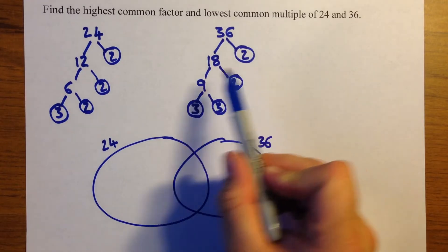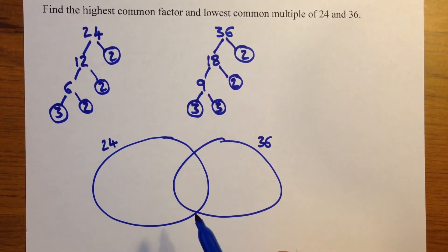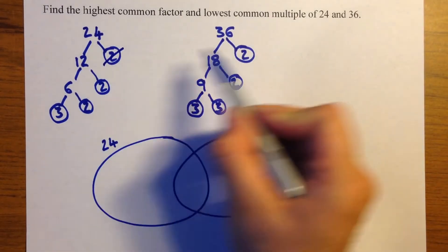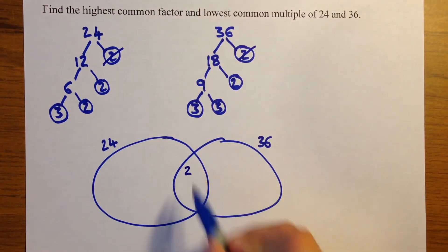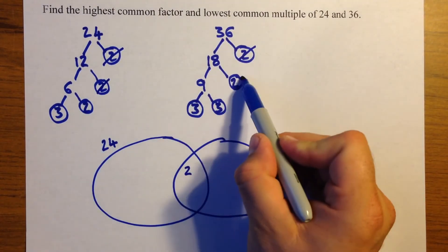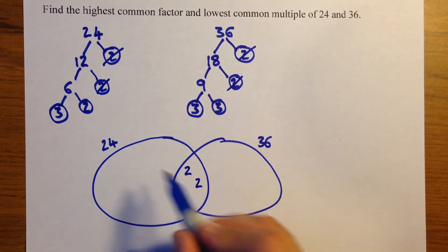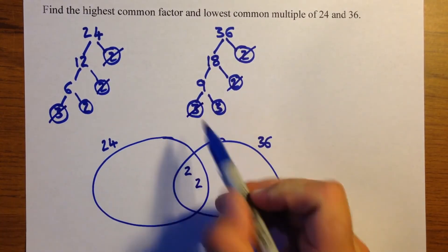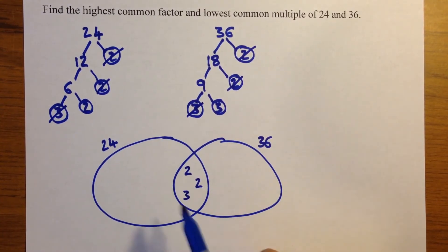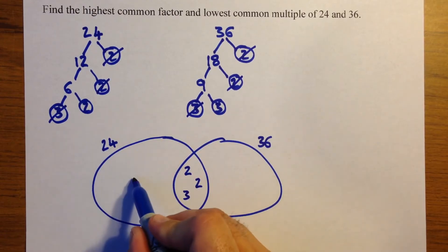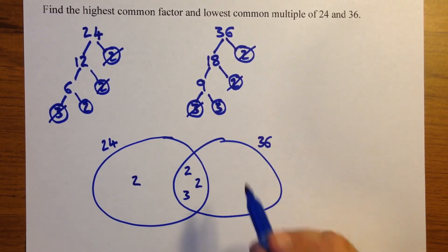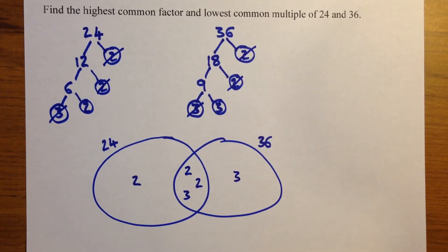Now any numbers that appear in both trees can go in the middle of the diagram. So 2 and 2 goes in the middle. 3 and 3 goes in the middle. We're left with a 2 here which goes in the 24 side. And a 3 here which goes in the 36 side.